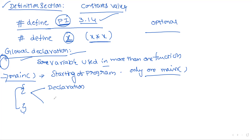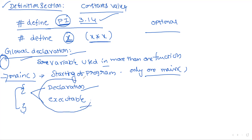Inside the main function we do two things: one is the declaration part and the second is the executable part. The declaration part declares all the variables that are used in the program. The executable part contains the actual operations we perform based on those variables. The main function contains everything.